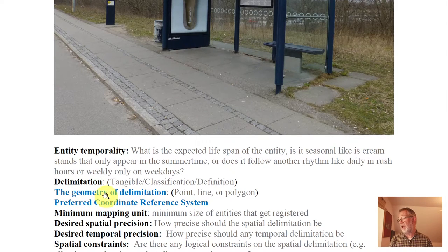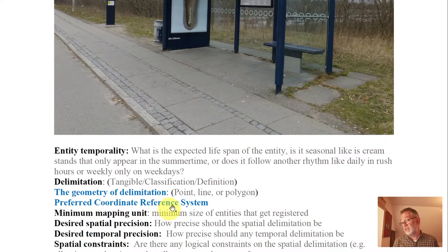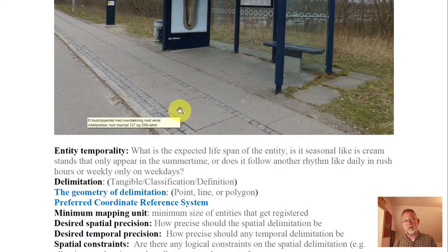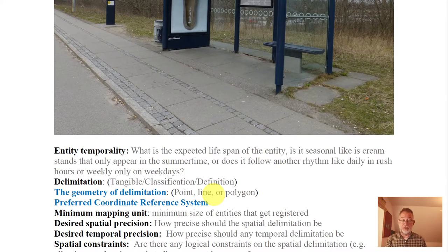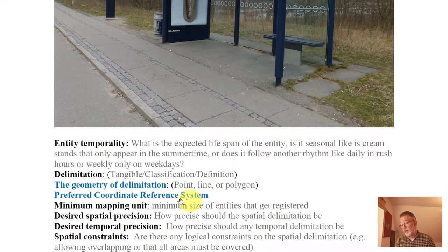Things shown in blue indicate that they are part of the schema. In the schema, we have to specify what geometry it is — remember, we had that in the feature class schema. So we specify: is it a point, is it a line, or is it a polygon? And we also specify the preferred coordinate reference system. Bus stops in Denmark would probably be in the 25832 coordinate reference system. If we were mapping global bus stops, we would probably use the WGS 4326 reference.